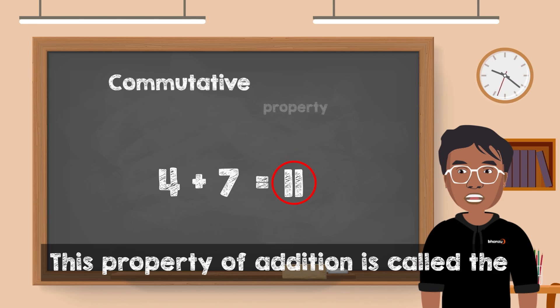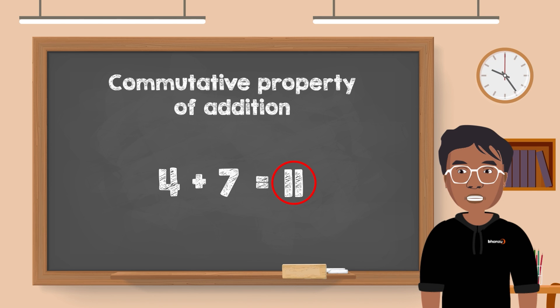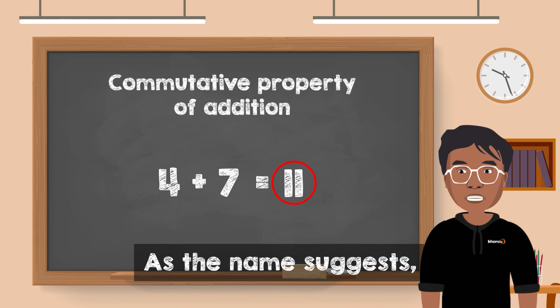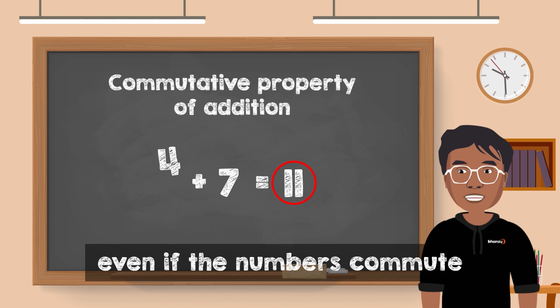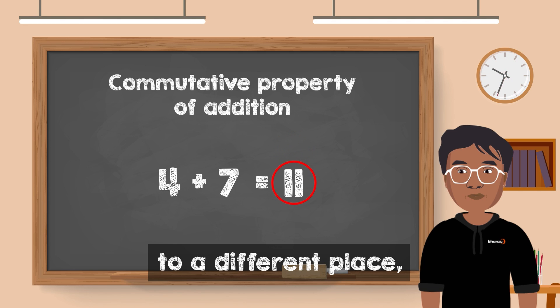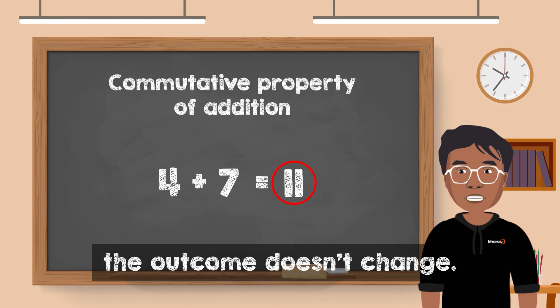This property of addition is called the commutative property. As the name suggests, even if the numbers commute to a different place, the outcome doesn't change.